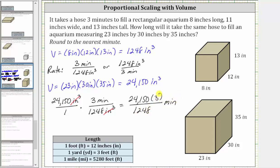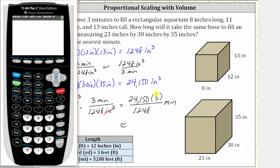And now let's evaluate this quotient on the calculator, and we are told to round to the nearest minute. We need the numerator in parentheses. We have open parenthesis 24,150 times three, close parenthesis, divided by 1,248.